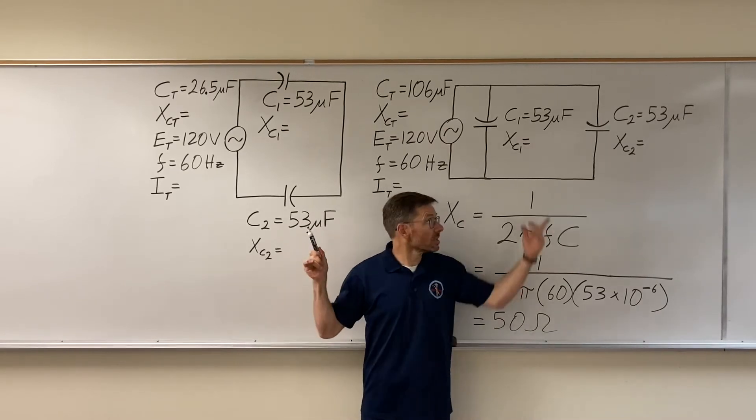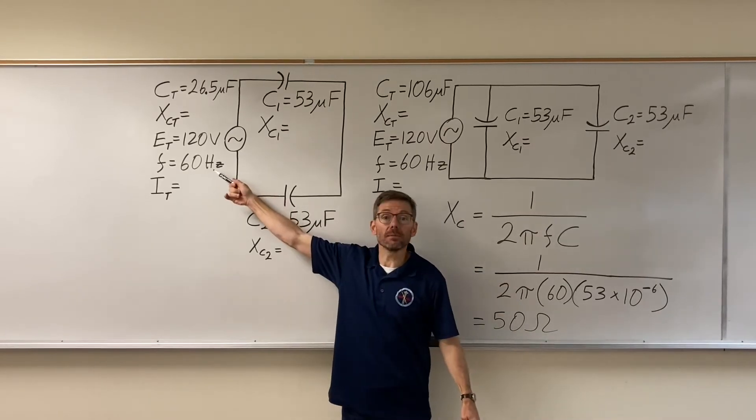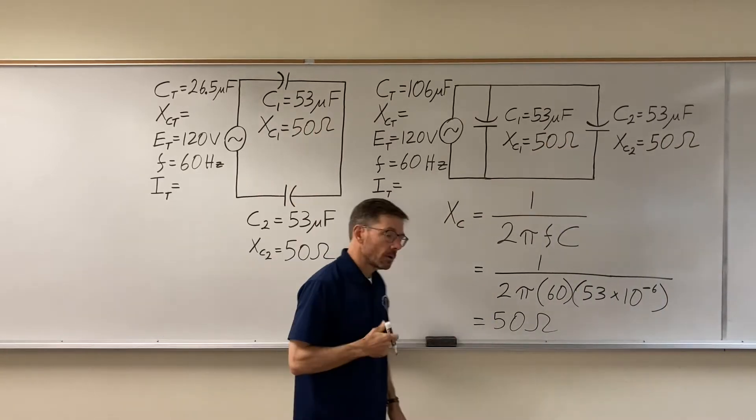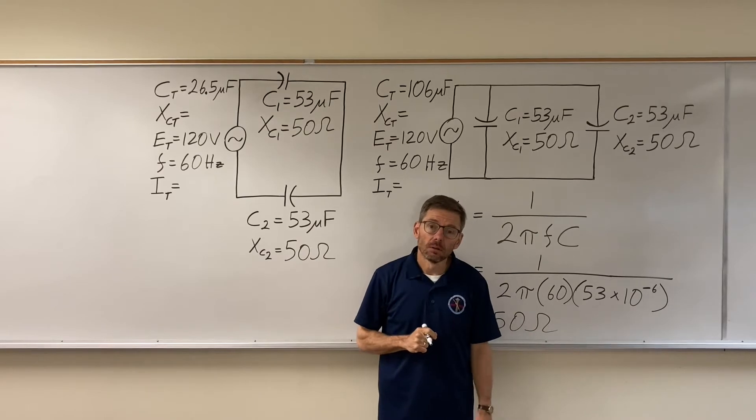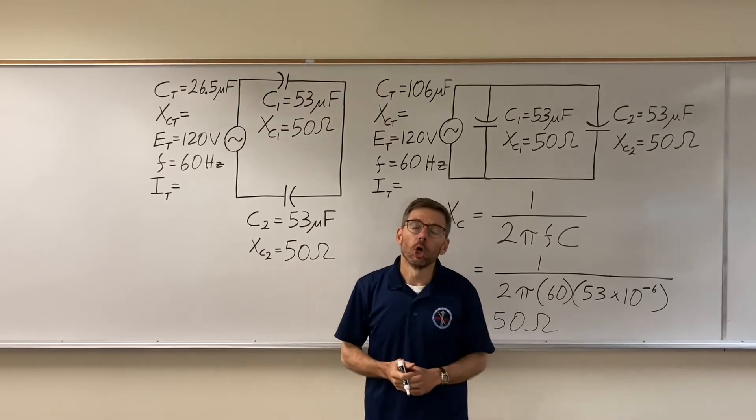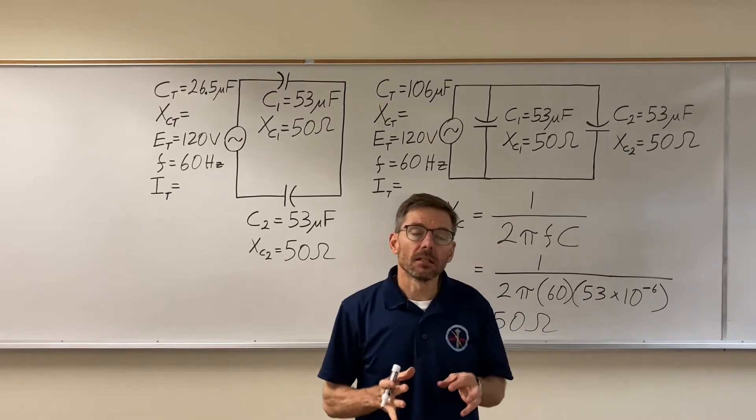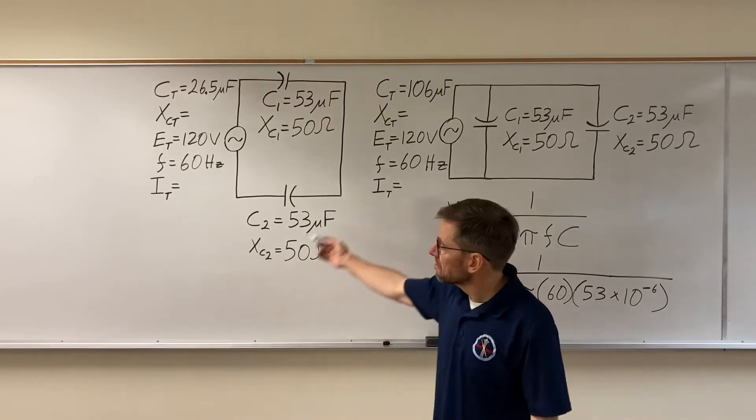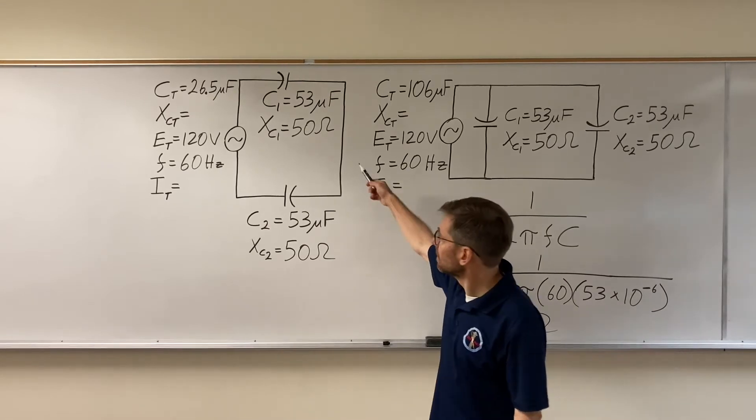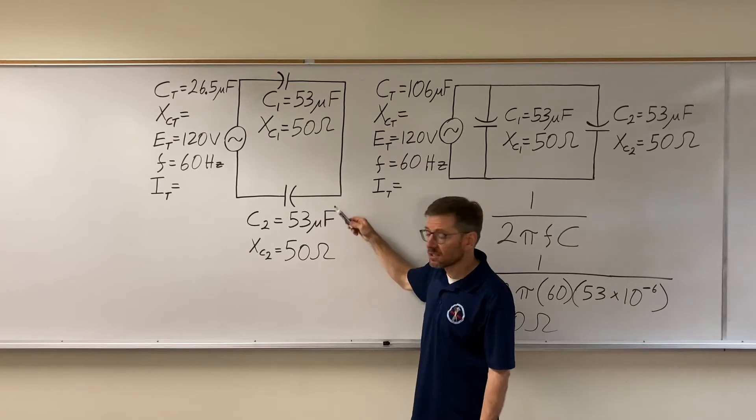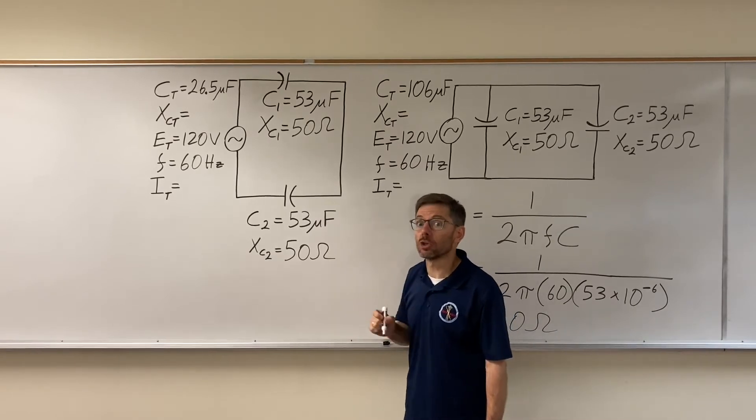Whether it's in series or parallel, they're getting hit with the same frequency. The question is now, how do ohms get added? And I'll tell you, ohms get added like you always added ohms. So in a series circuit, 50 ohms and 50 ohms add together and become 100 ohms.